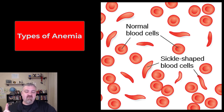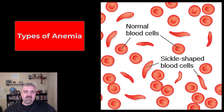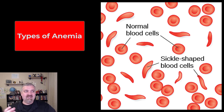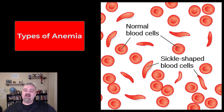Well, if you have one copy of the sickle cell gene, you are less likely to develop cerebral malaria — less likely to die from malaria. So in some parts of the world, it's still advantageous to have one so-called bad copy of these genes. That's why calling a gene good or bad really always depends on the situation and the environment. So that would be sickle cell anemia as one type.